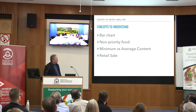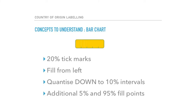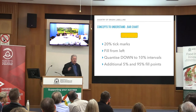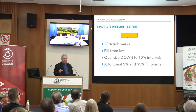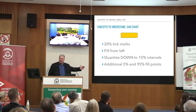The concepts to understand: the bar chart, what is a non-priority food, whether you go for minimum versus average content, and what is a retail sale. The bar chart is basically a box with 20% tick marks at 20, 40, 60, and 80. You fill from the left. You quantize down to 10% intervals — so if your product has 68% Australian content, you fill your bar chart to 60%. There are extra tick marks at 5% for very low content, and at 95% for very high content.